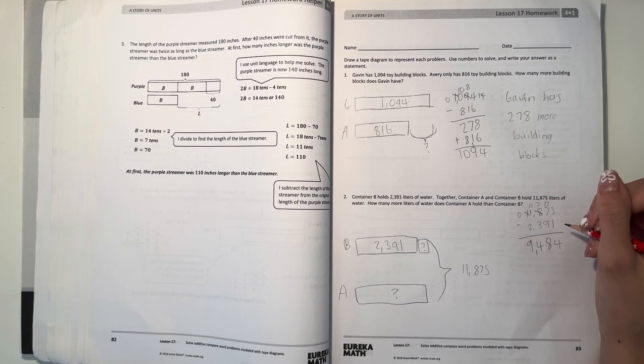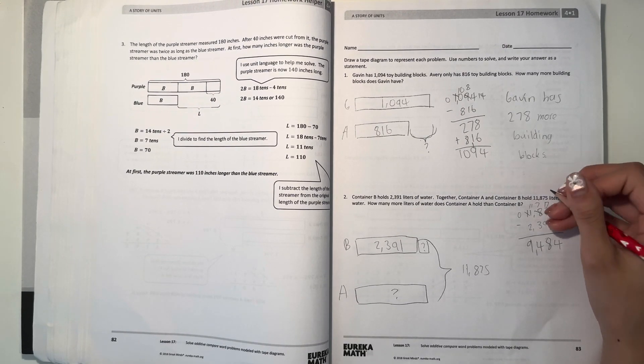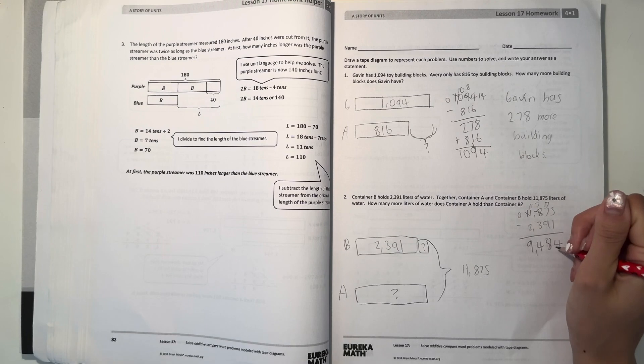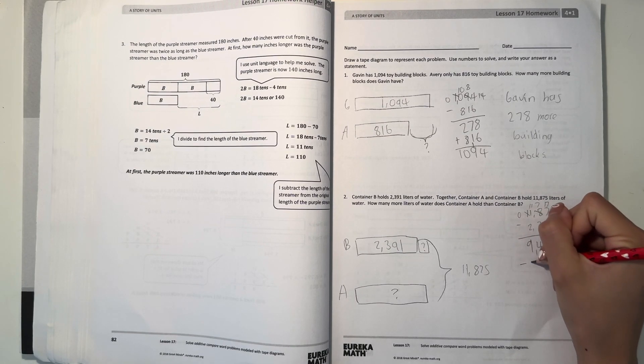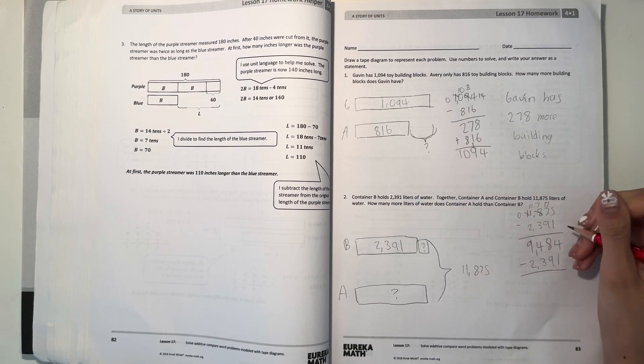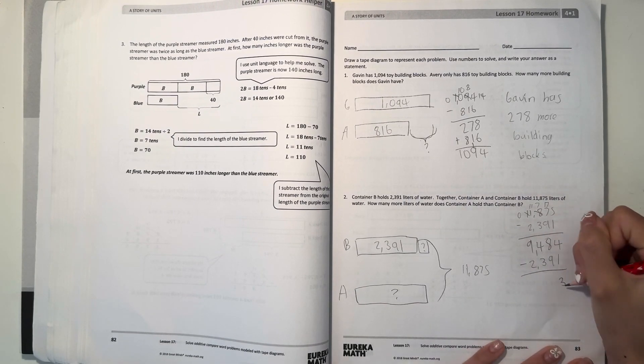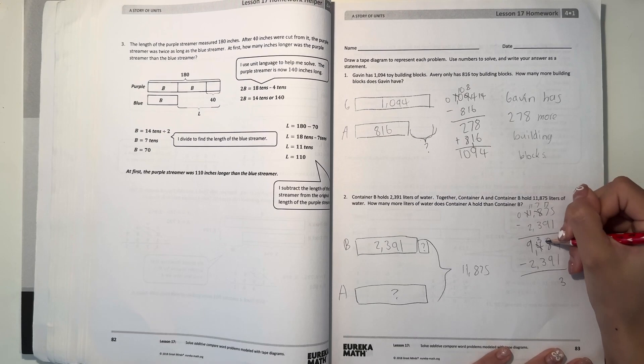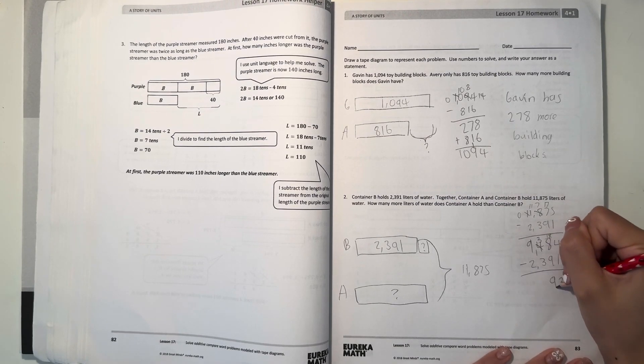And now it says how many more liters of water does it hold. Well, let's do 9,484 minus 2,391. 4 minus 1 is 3. Minus 9 becomes 18 minus 9, which is 9. That's 0 and that's 7.